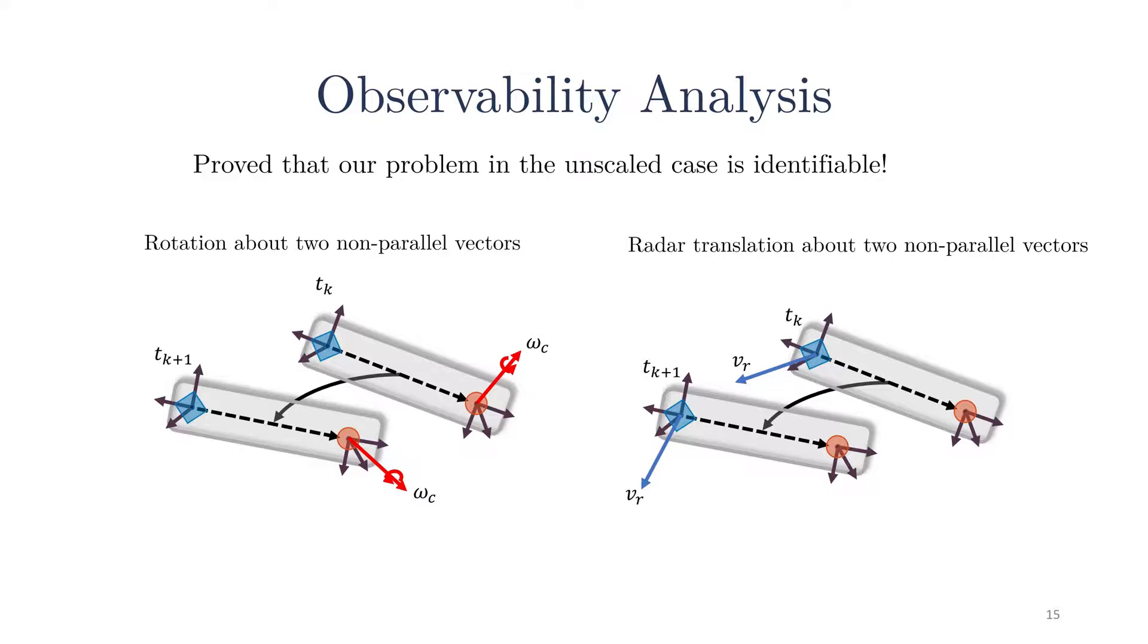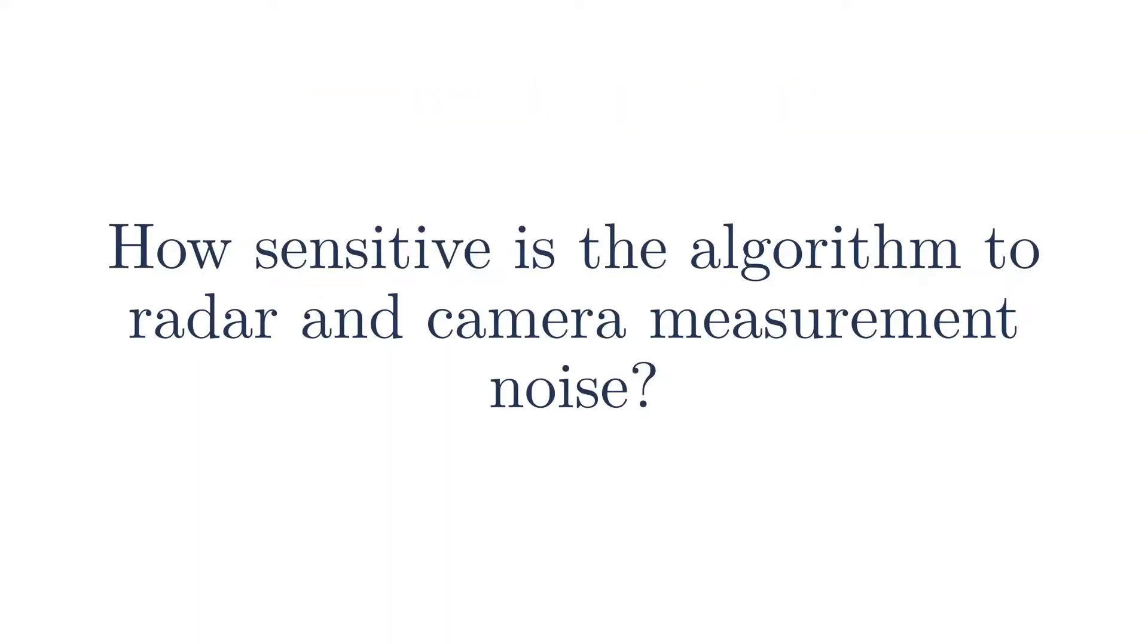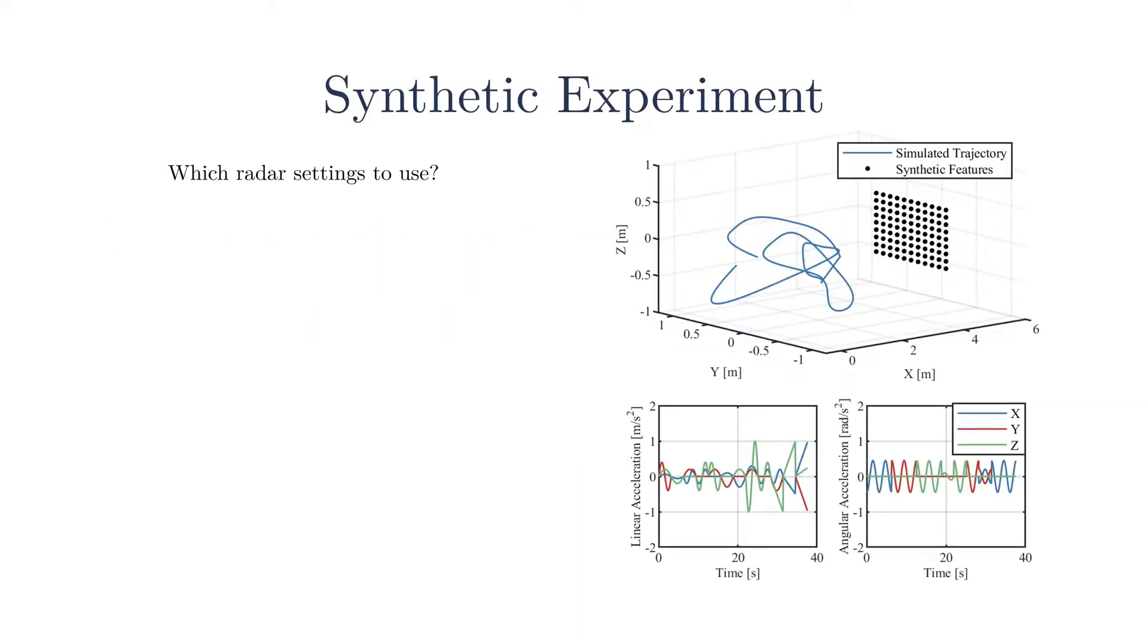However, we posit, based on our experiments, that these constraints are less likely to occur in practice. To evaluate the sensitivity of the algorithm with respect to radar and camera measurement noise, the synthetic experiments were particularly important for choosing the radar settings for our real world experiments. Through our experiments with our real world radar, we found that increasing the radar velocity accuracy decreased the maximum measurable velocity. As a result, we wanted to measure the maximum measurable velocity while ensuring the radar velocity measurements were accurate enough for extrinsic calibration.